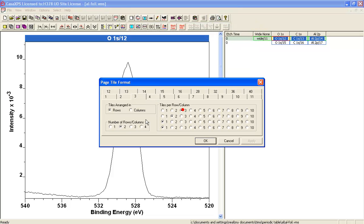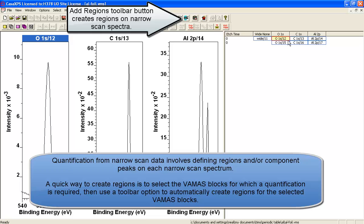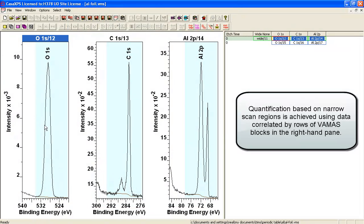Let's go for 3, 1, 1 and select these and press the button that says add regions. You have immediately got regions defined on these spectra.